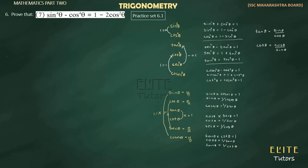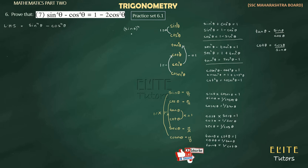What we do is write the left hand side, which is sine raised to 4 theta minus cos raised to 4 theta. What does sine raised to 4 theta mean? It means sine theta multiplied 4 times. So if we write it as a square, we can rewrite sine raised to 4 theta as sine theta raised to 4.